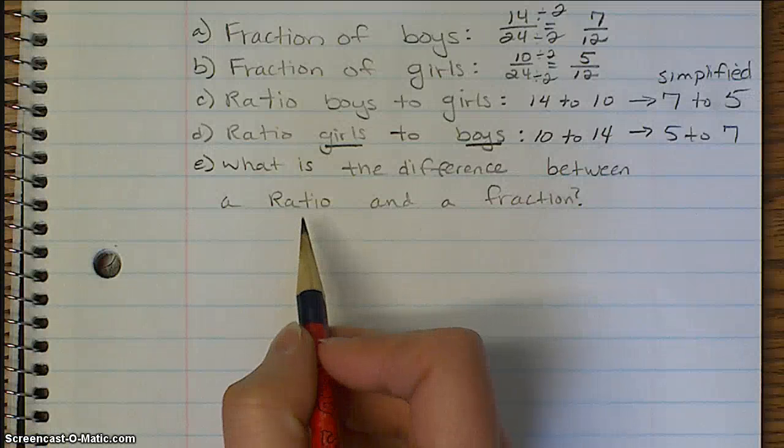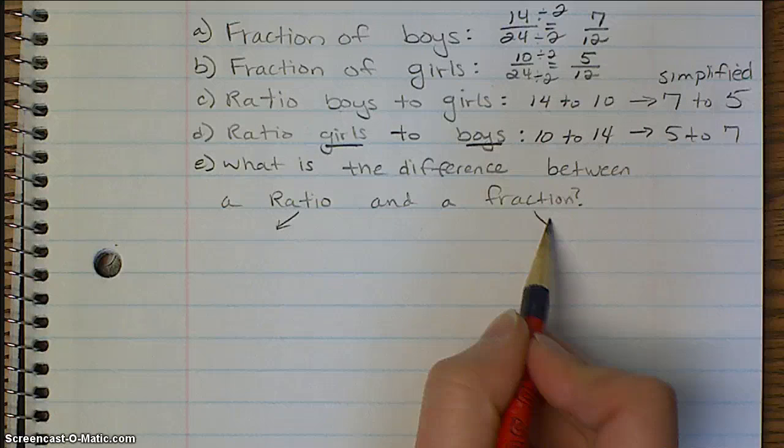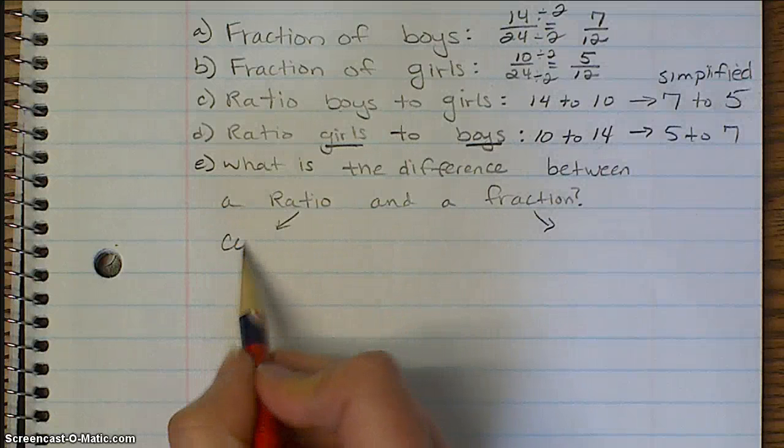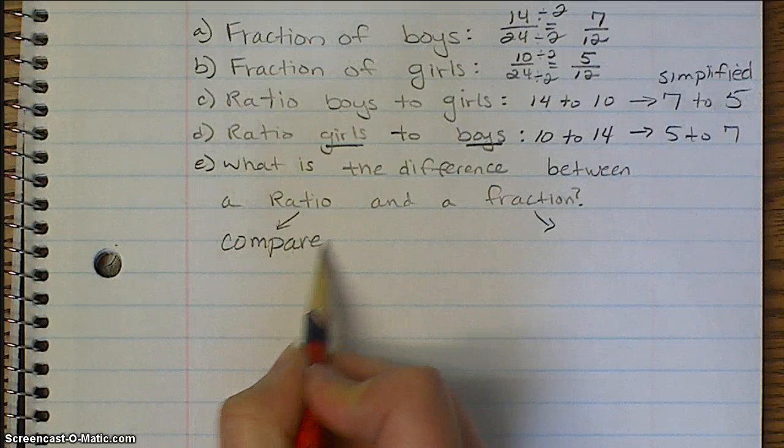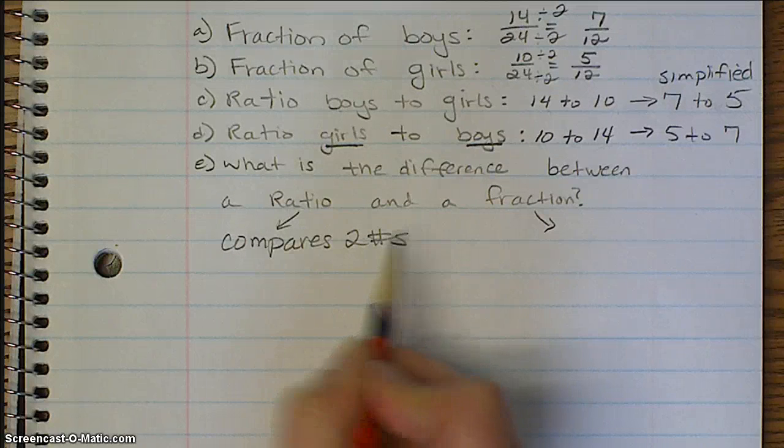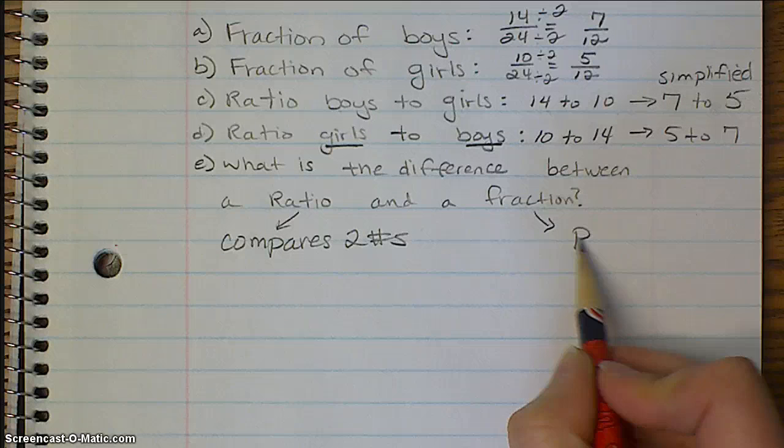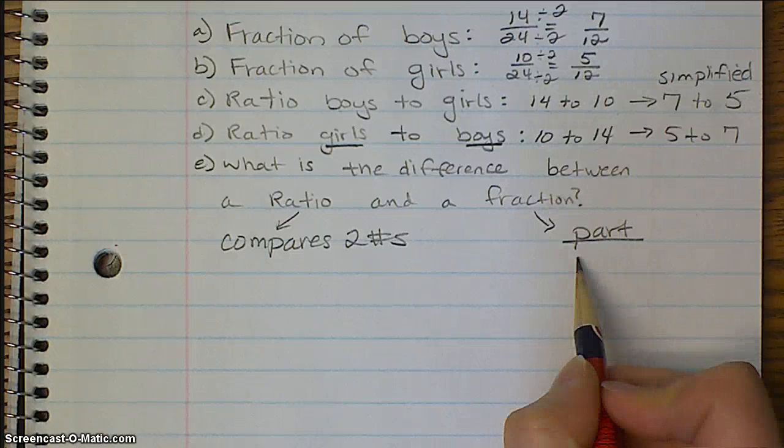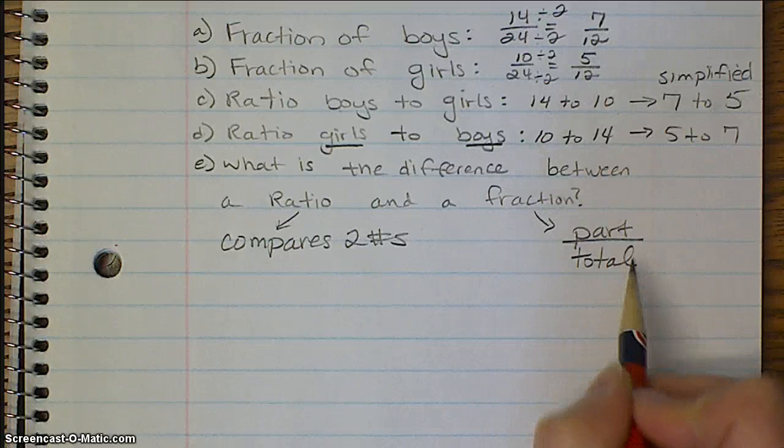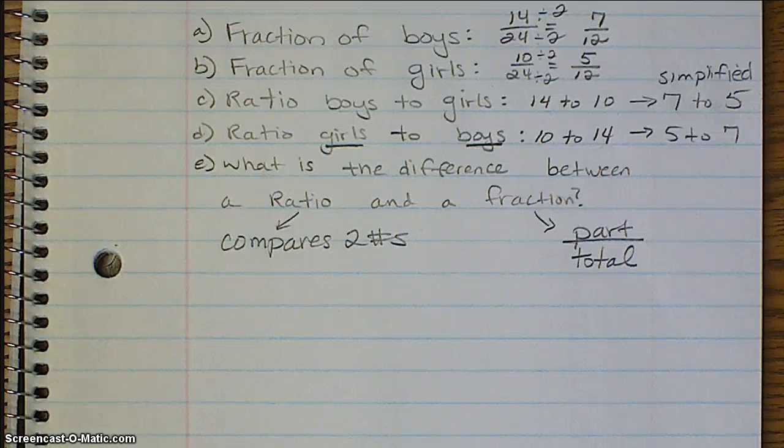Okay, the main difference between a ratio and a fraction. A ratio just compares two numbers. A fraction describes a set of values by comparing the part to the total. In a ratio, you don't need the total.